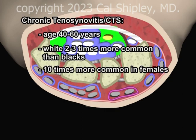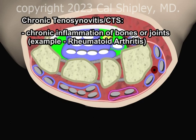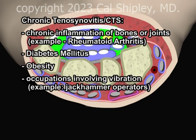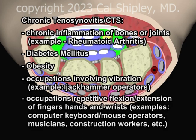These risk factors include age, race, and gender; chronic inflammatory conditions of the bones and joints such as rheumatoid arthritis; diabetes; obesity; occupations involving exposure of the hands and wrists to recurrent vibration, such as construction workers who operate jackhammers; and occupations involving repetitive flexion and extension of the fingers, hand, and wrist, such as office workers using computer keyboards and mice, musicians, construction workers, and grocery checkout employees. It is important to note that this is just a partial list of the many risk factors and physical conditions that have been associated with the onset of carpal tunnel syndrome.